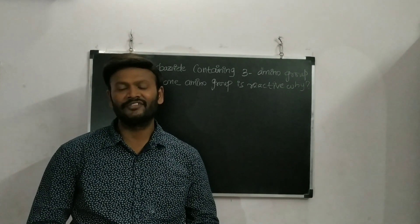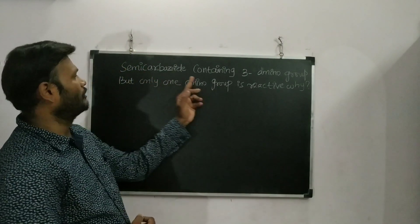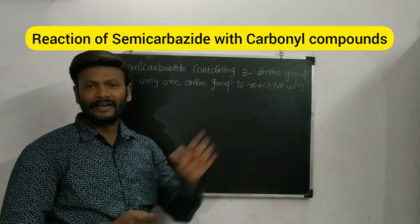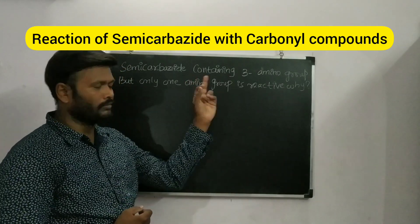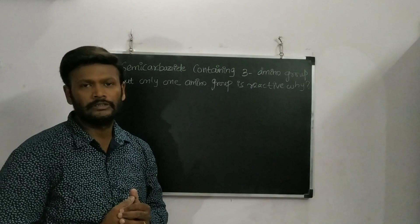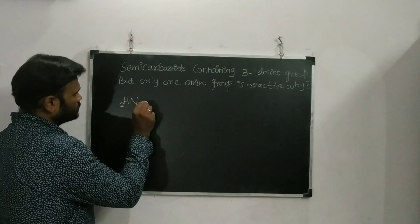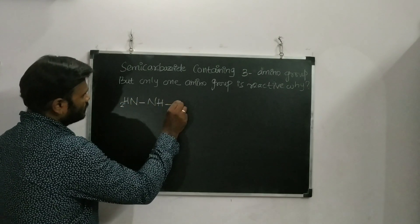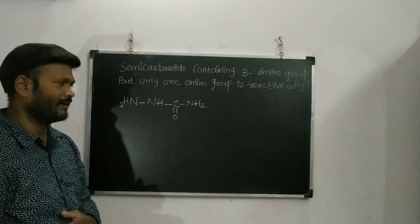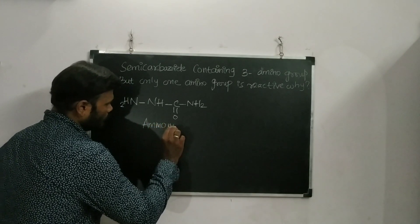Welcome to our channel. Today we are going to talk about a very important topic: semicarbazide. Semicarbazide contains two amino groups but only one amino group is reactive — why? To understand this concept we need to look at the structure of semicarbazide. The structure is NH₂–NH–C(=O)–NH₂. Semicarbazide is a kind of ammonia derivative.